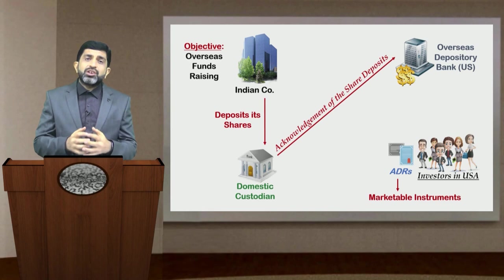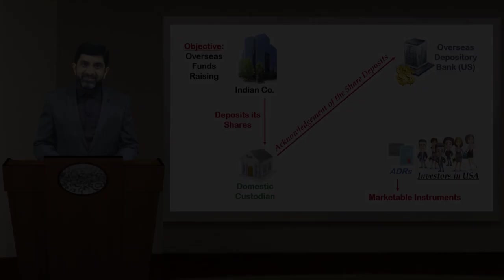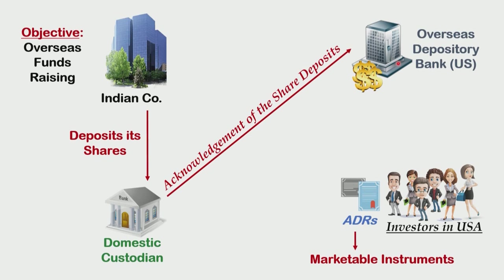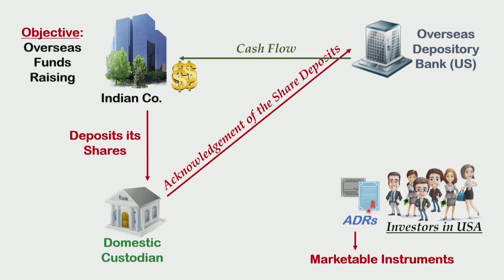These ADRs can therefore be directly traded among investors in the USA. The monies lying with the overseas depository bank are to be passed on to the Indian company. The overseas depository bank will deduct certain charges for arranging the whole process, and all issue-related expenses will be deducted from the dollar investment. The remaining balance is then transferred to the Indian company. Finally, the ADRs — certificates of deposits of those shares with the overseas bank — are with the investors, and the money of these investors has reached the Indian company, accomplishing the objective of overseas fundraising.